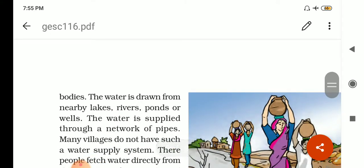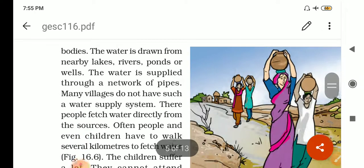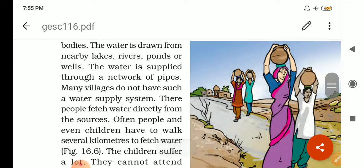And the water is drawn from nearby lake, river, ponds and wells. Then this is supplied through the network of pipelines. But in the villages, what happened? In the villages there is no proper system.